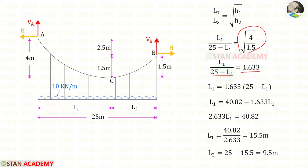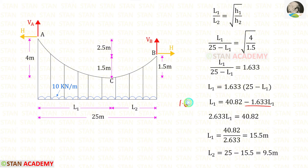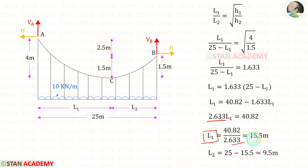We take the term to the right side and multiply the two terms. Taking the next term to the right side, it becomes positive: 1.633 L1 plus L1 gives us 2.633 L1. Taking the remaining term to the denominator, we finally get L1 = 15.5 meters. Since L2 = 25 minus L1, L2 = 9.5 meters.